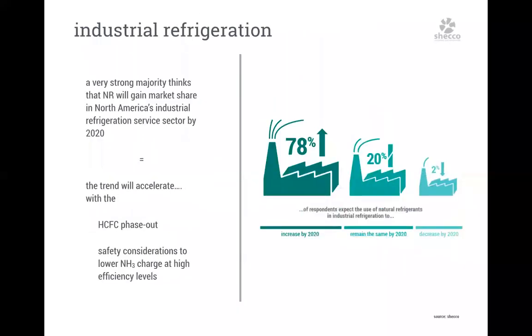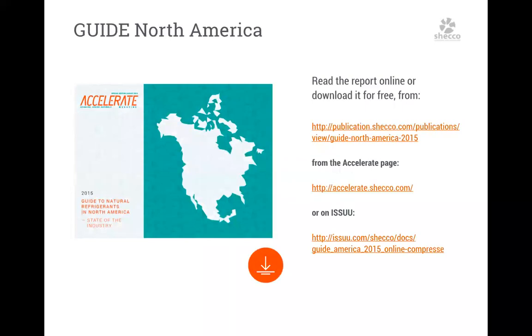A strong majority — 78% — believe natural refrigerants will gain market share in the industrial refrigeration sector in the next four to five years. The trend will accelerate with the HCFC phase-out at the international level and safety considerations driving lower ammonia charge at high efficiency levels. You can read the report online and download it for free from the publications page, the Accelerate page, or from Issuu — it is easy to download and view online.